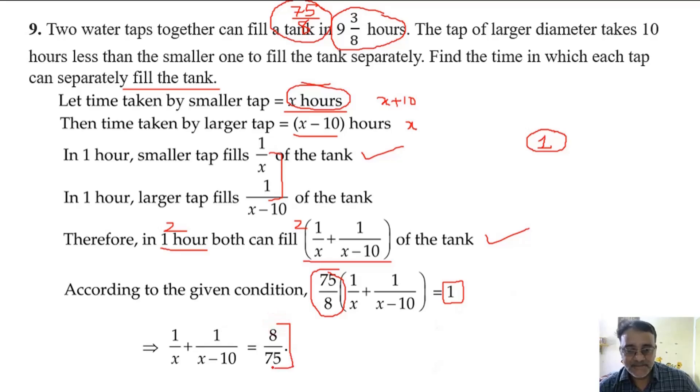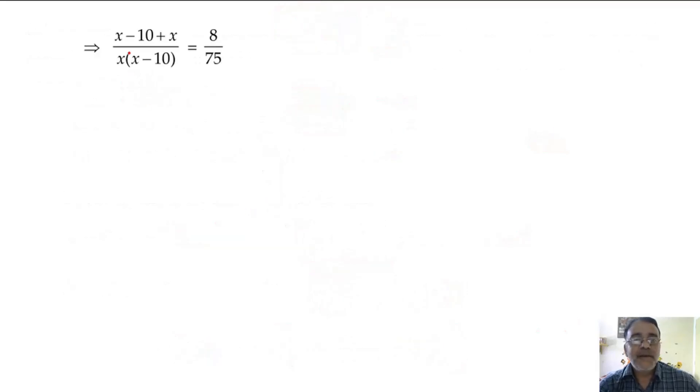Now we have to take LCM. After taking LCM, x minus 10 will go here and x will come here. So x minus 10 plus x into x minus x into x minus 10 equals 8 upon 75. After that, we have to do cross multiplication.